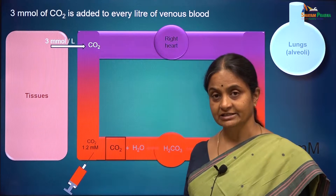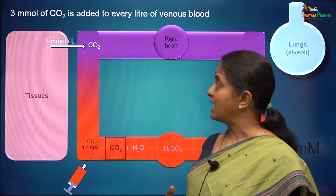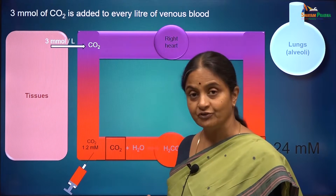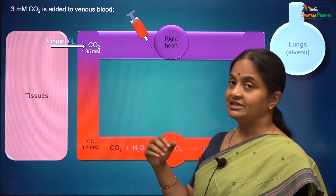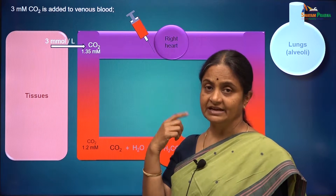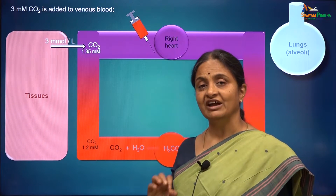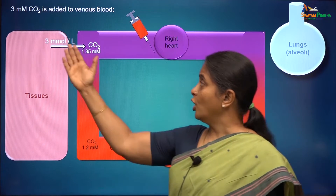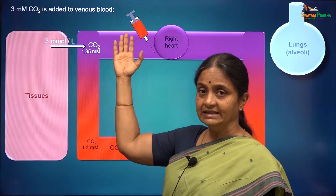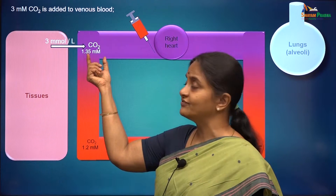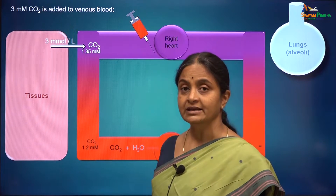In normal circumstances, we have 1.2 millimoles per litre carbon dioxide in arterial blood and 3 millimoles per litre carbon dioxide being added into venous blood. But does the concentration go up to 4.2? Not really. If we take a sample of mixed venous blood near the right heart from the central vein, we get a carbon dioxide concentration of only 1.35 millimoles per litre. Therefore all the 3 millimoles per litre that comes in must be processed to give something else, with only a small amount remaining dissolved as free carbon dioxide.